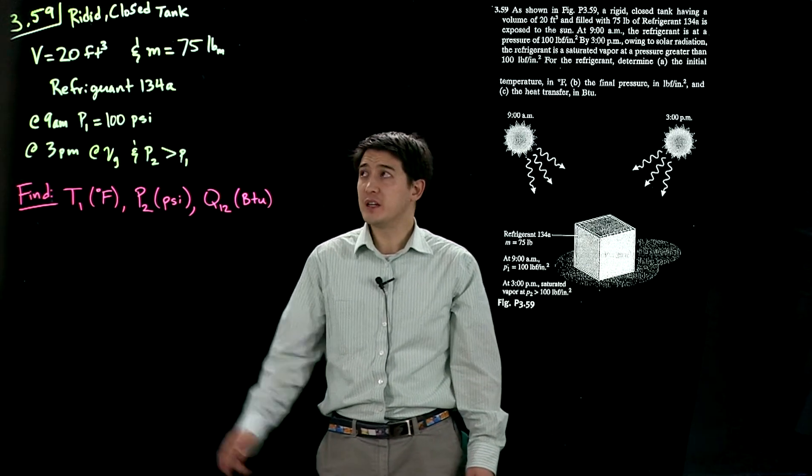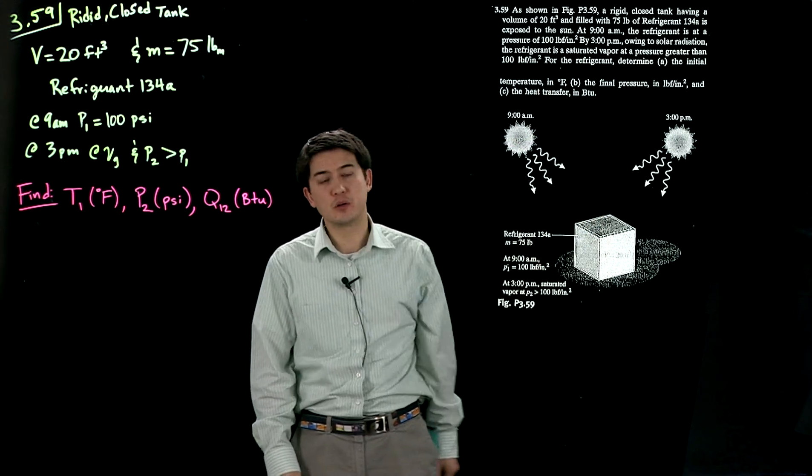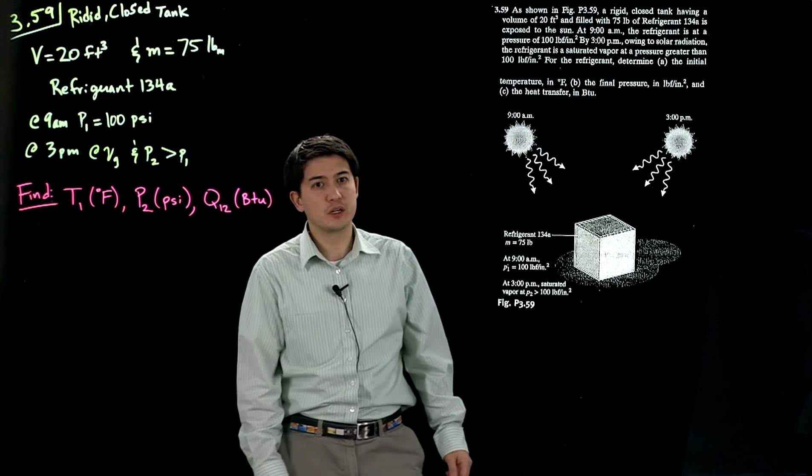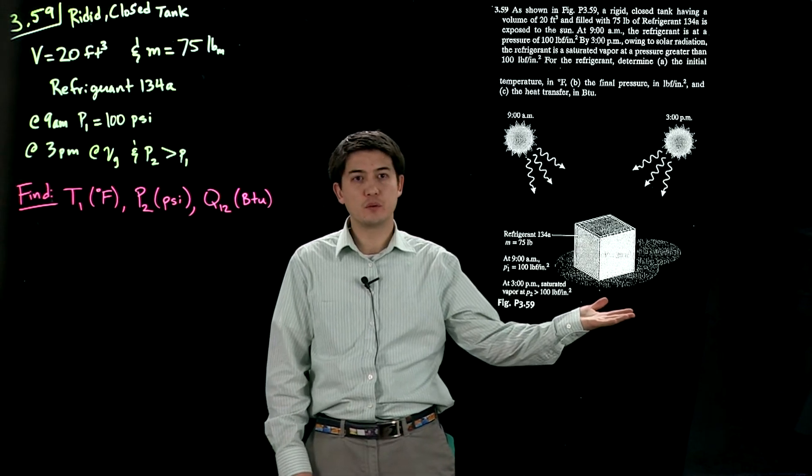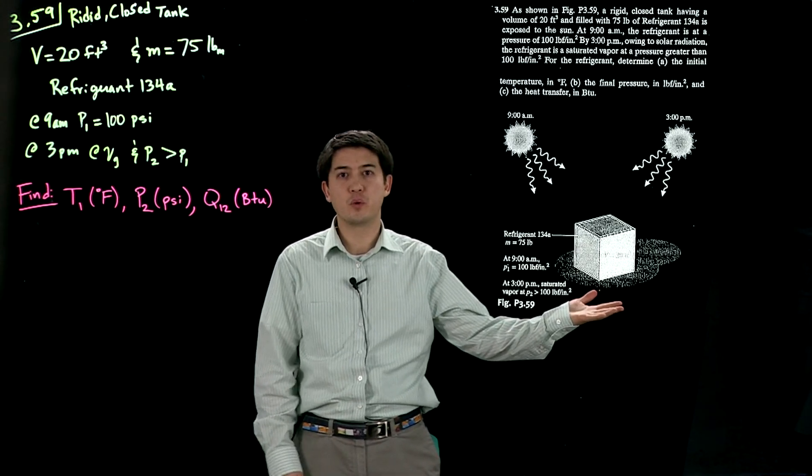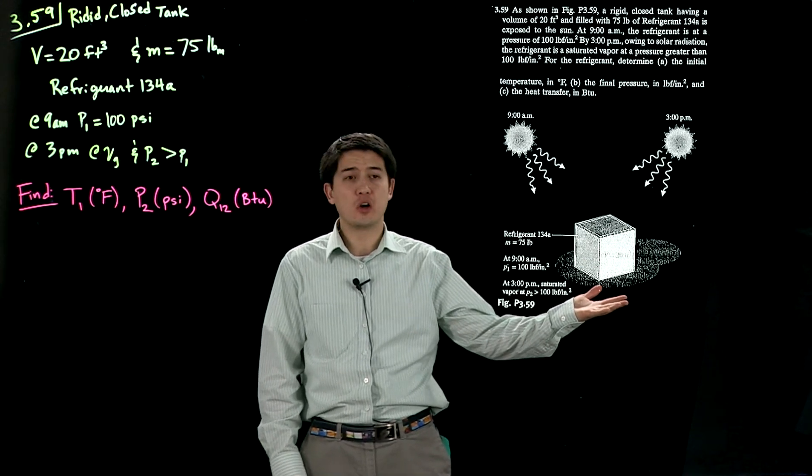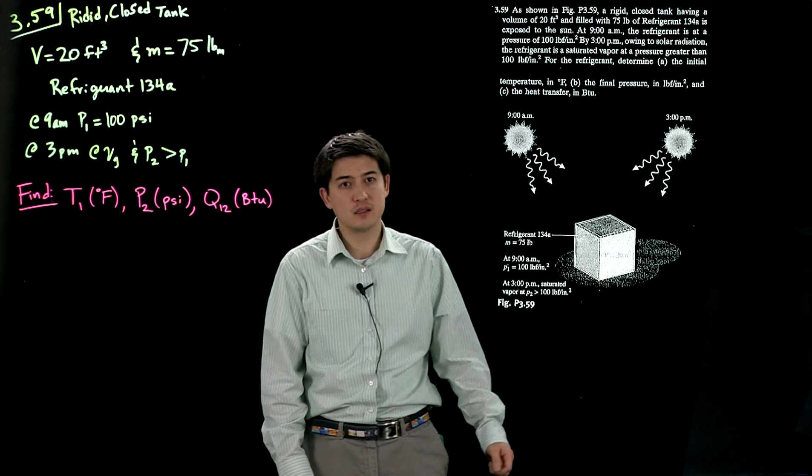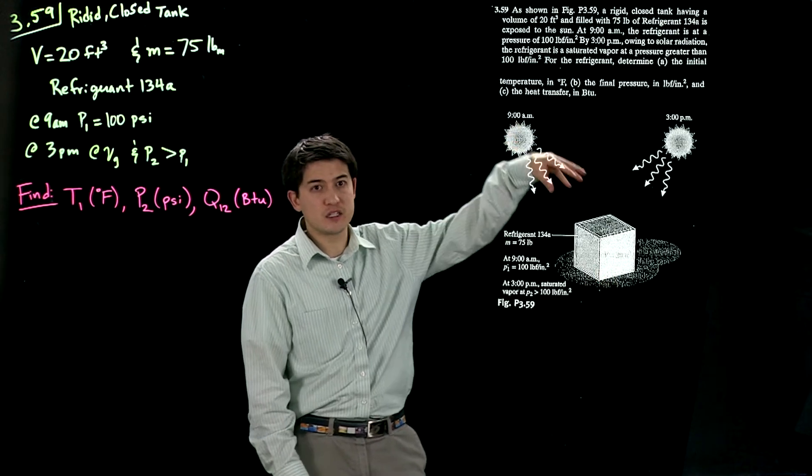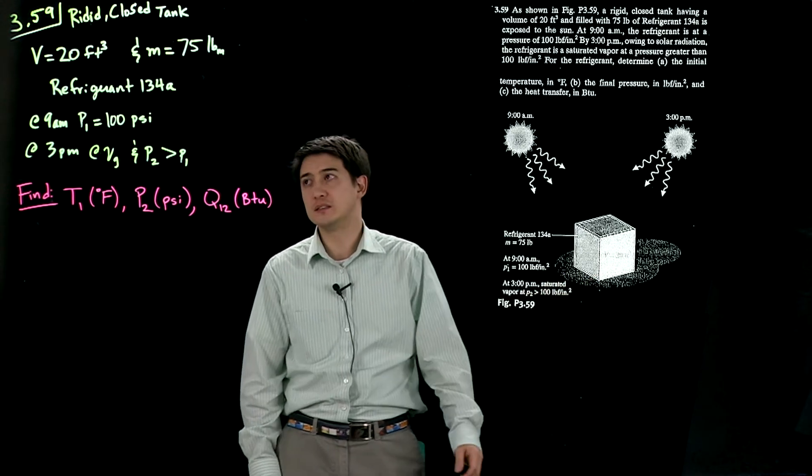All right, this is problem 59 chapter 3. We have the problem statement here. You can read it. It's also in your book. Essentially what it's saying is that you have a rigid closed box here with refrigerant 134A inside of it. This box has a volume of 20 cubic feet. It's listed right here on the box. And it has heat energy shining from the sun coming from above. This box is also completely sealed.